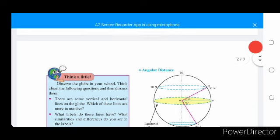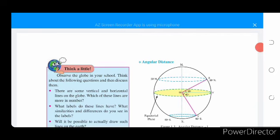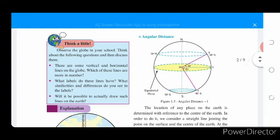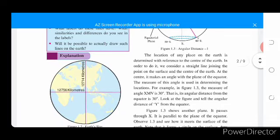Think a little. Observe the globe in your school. Think about the following questions and then discuss them. Point 8: There are some vertical and horizontal lines on the globe. Which of these lines are more in number? What level do these lines have? What similarities and differences do you see in the levels? Will it be possible to actually draw such lines on the earth?